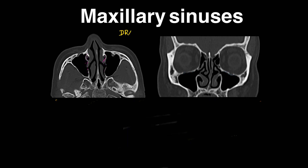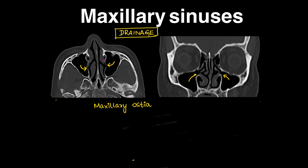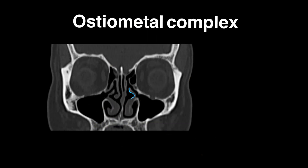Let's discuss how the maxillary sinuses drain. They drain through openings called maxillary ostia — ostium is singular, ostia is plural. There is something called the ostiomeatal complex, which we'll discuss now. As the name suggests, it has the maxillary ostia and the meatuses.